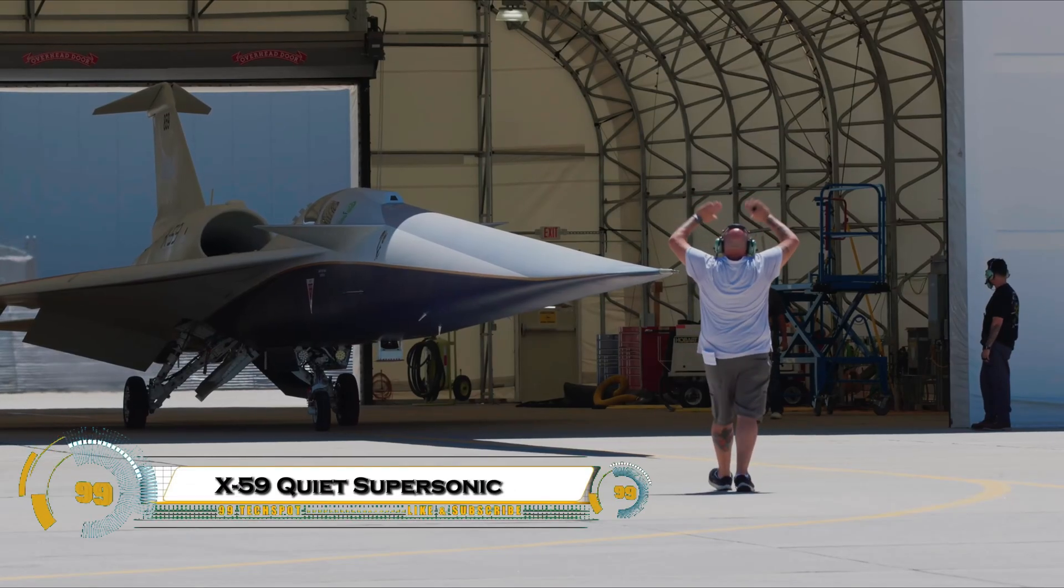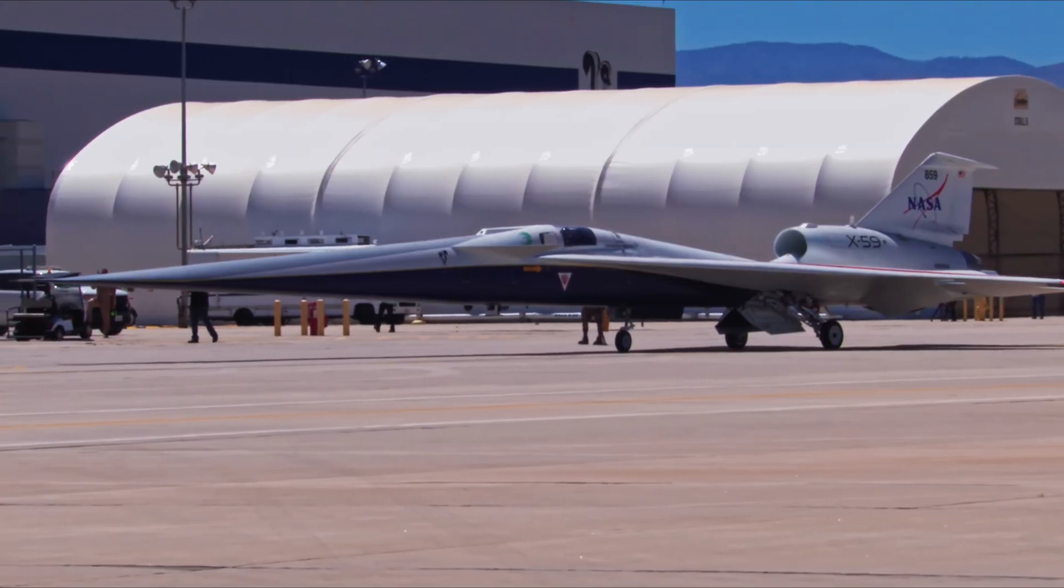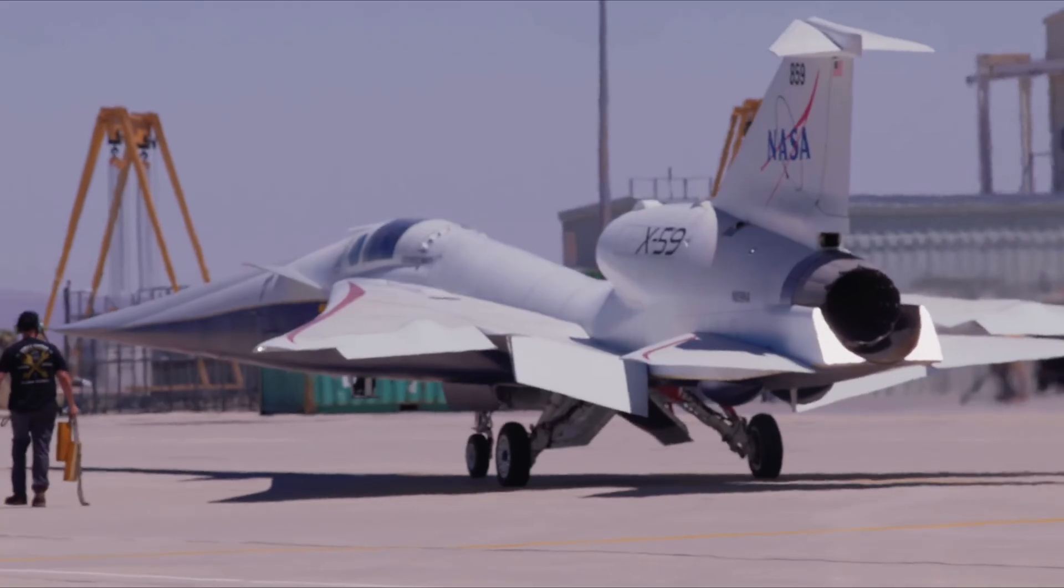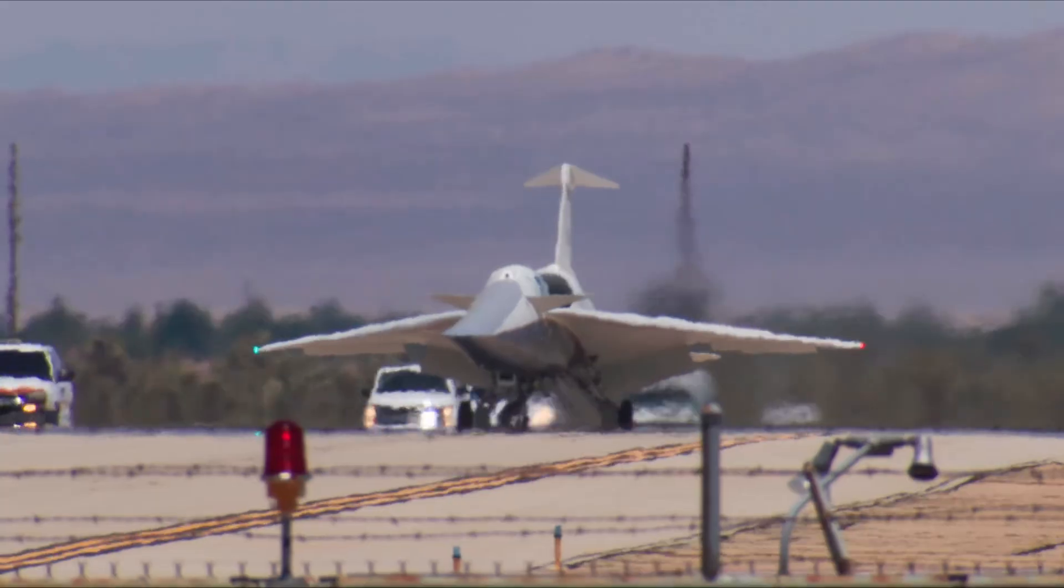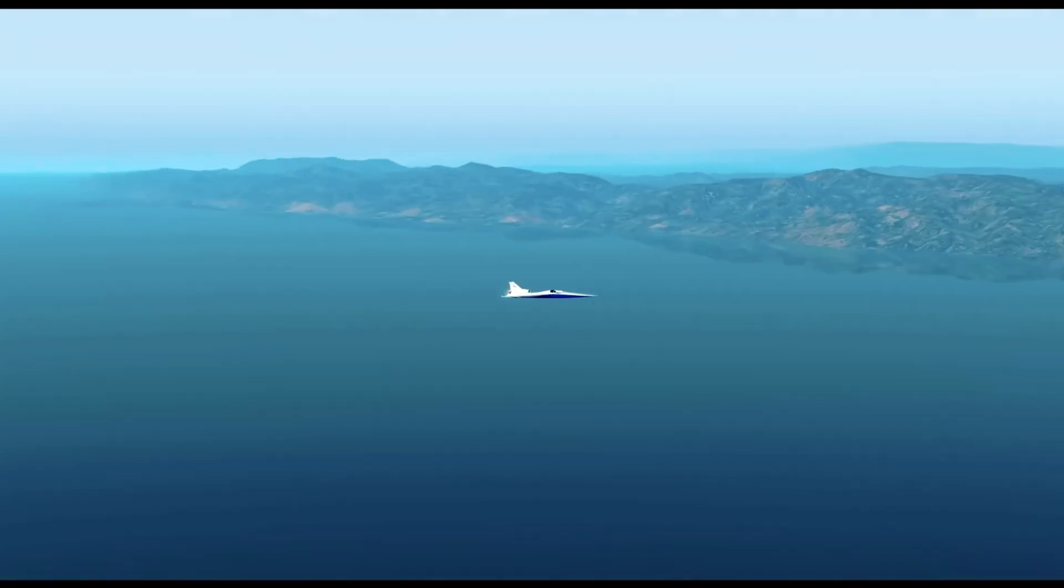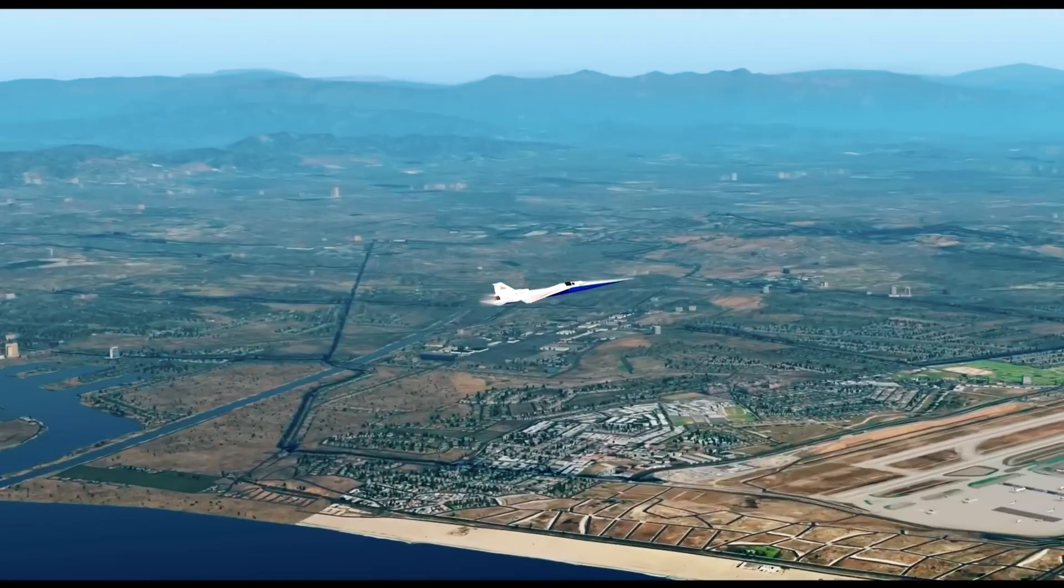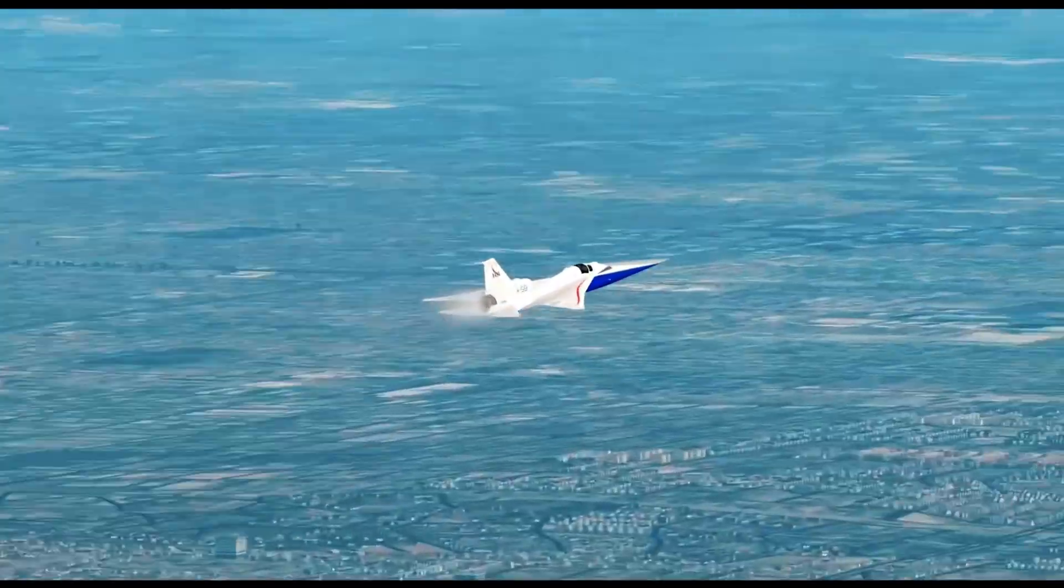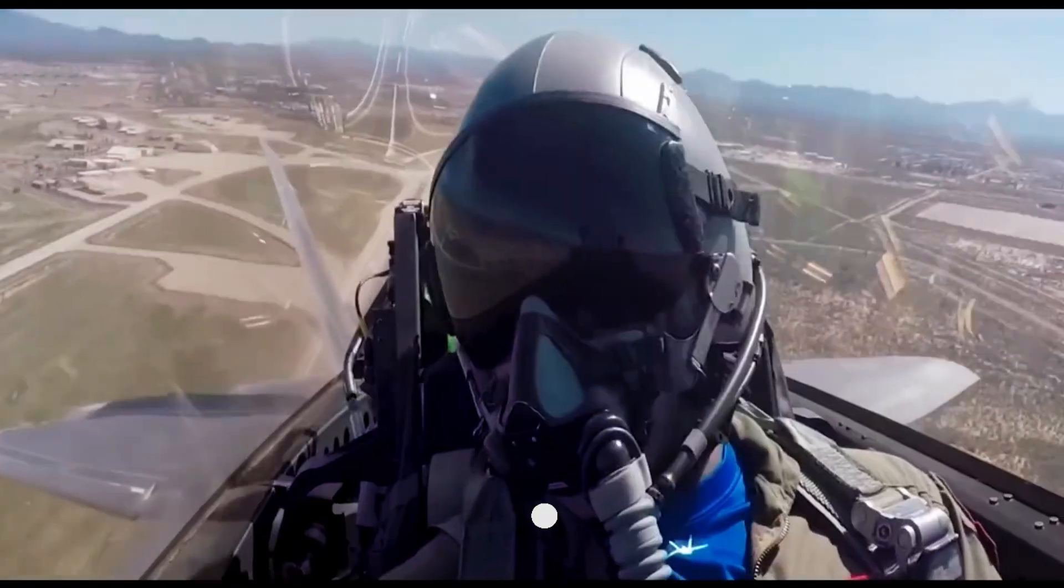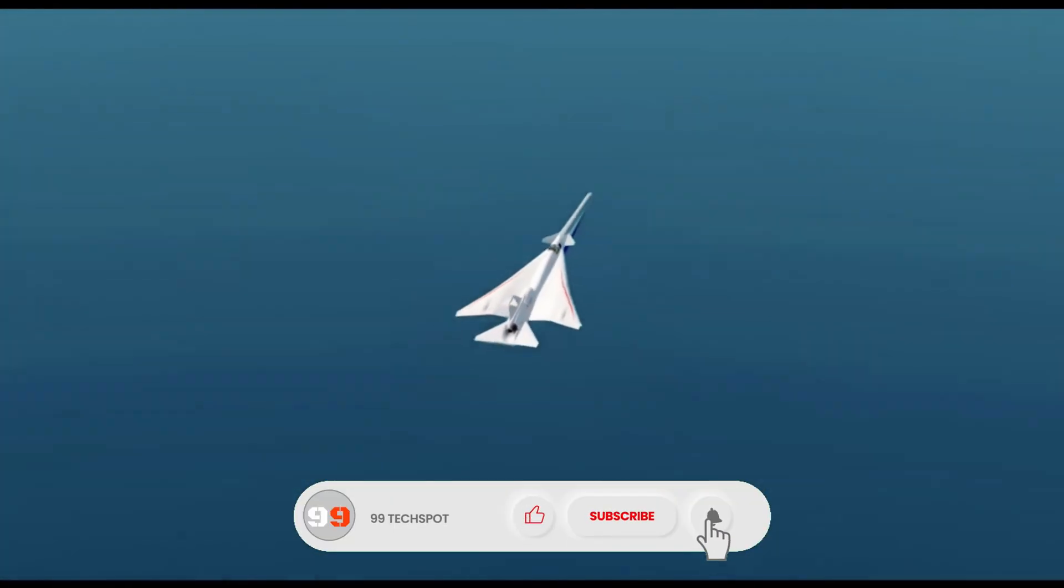NASA's X-59 is a game-changer, a supersonic aircraft designed to fly faster than sound without creating ear-shattering sonic booms that banned supersonic flight over land decades ago. This sleek experimental jet uses revolutionary aerodynamic shaping with an incredibly long nose and uniquely positioned engines to break up shock waves, producing just a gentle thump instead of the traditional boom.